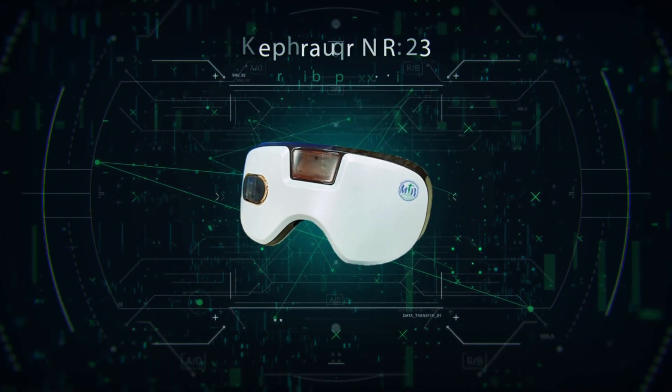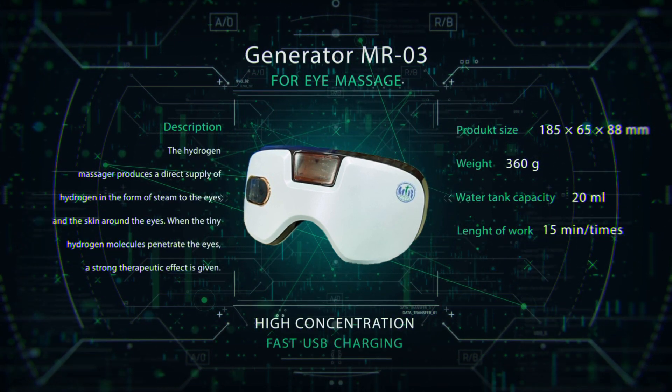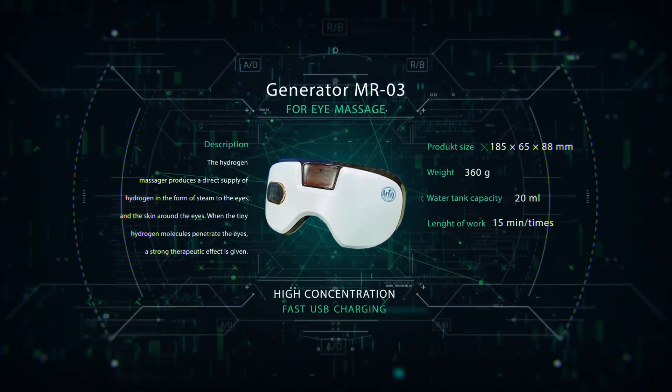Hydrogen eye massager MR03. The hydrogen massager produces a direct supply of hydrogen in the form of steam to the eyes and the skin around the eyes.